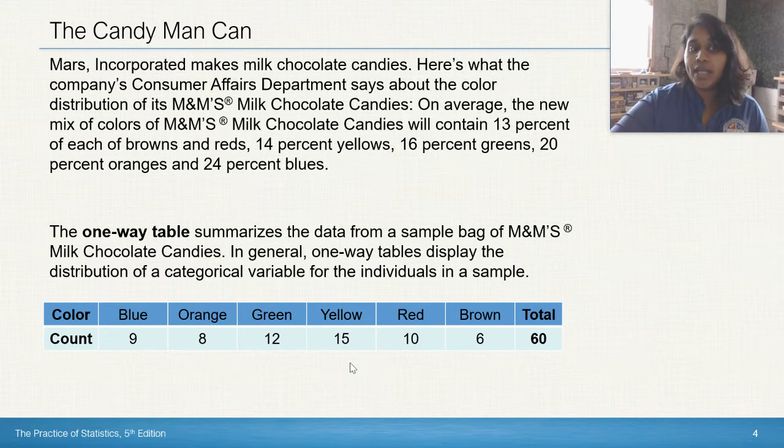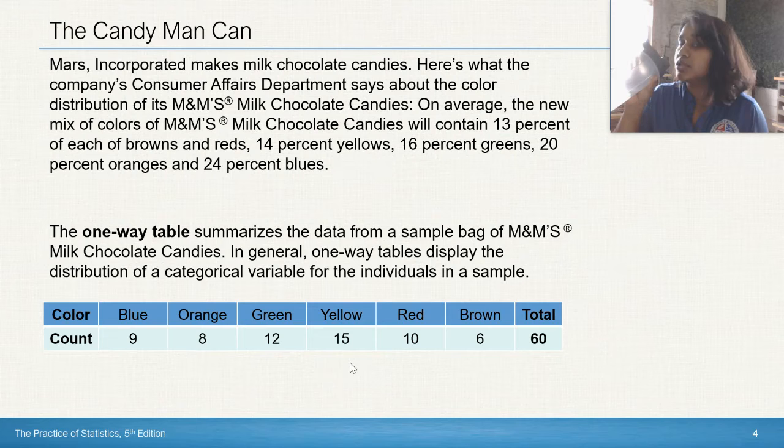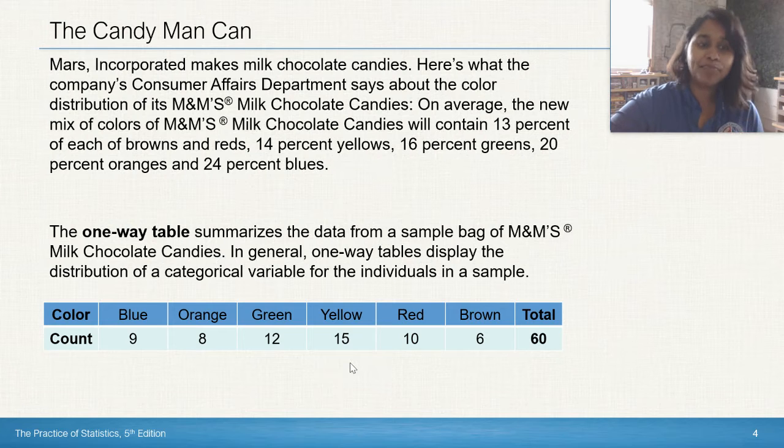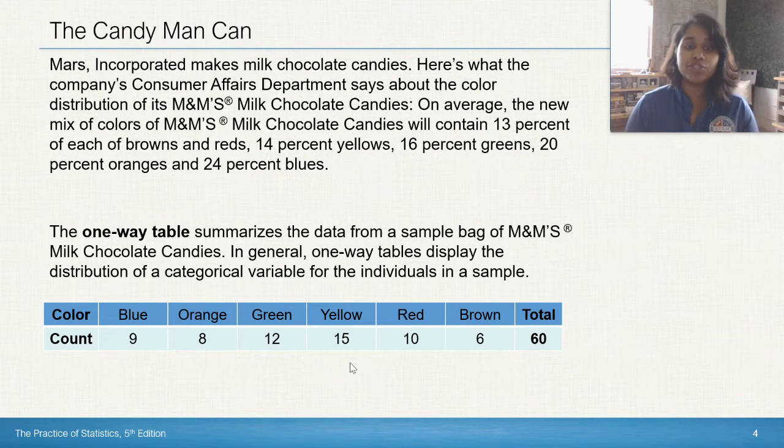Someone took a sample of 60 and went ahead and generated a one-way table to summarize what the counts actually look like in that bag. So in that bag, the blues were 9, orange 8, green 12, et cetera, et cetera.